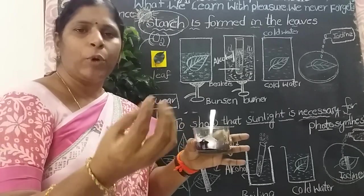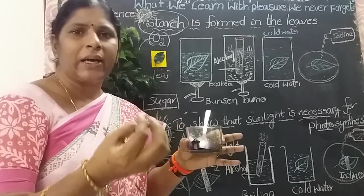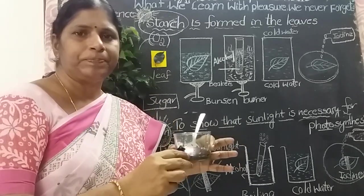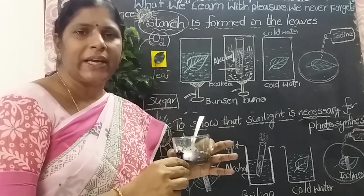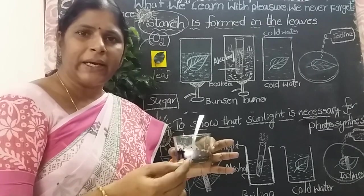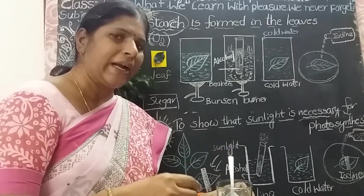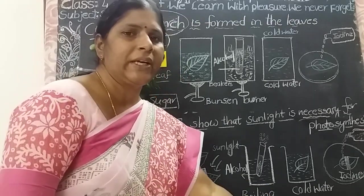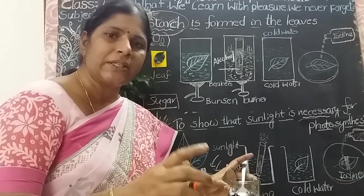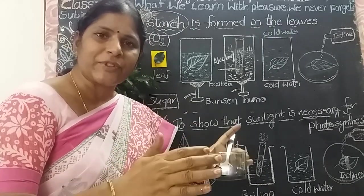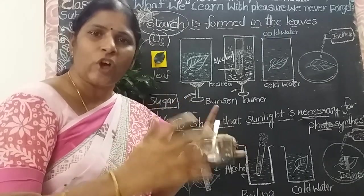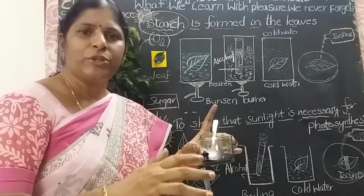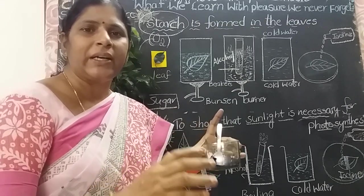Take a small quantity of rice, or bread, or any fruit. Add a few drops of iodine solution on it. If the substance turns into bluish black, that substance is rich in starch. If the substance does not change to bluish black, that substance does not contain starch.